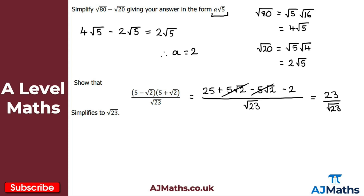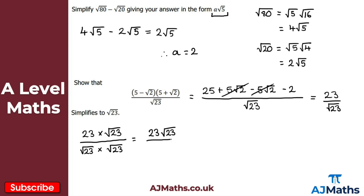We now have 23 over root 23. There's a surd in the denominator, so we rationalize by multiplying numerator and denominator by root 23. The numerator becomes 23 root 23, and the denominator becomes root 23 times root 23, which is 23. The 23s cancel, leaving just root 23 — which is exactly what we needed to show.